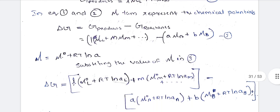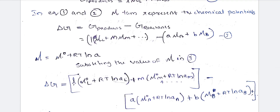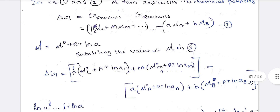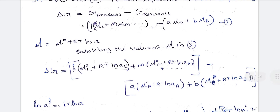In standard state, μ = μ° + RT ln a. Substituting this into the delta G expression, we get: delta G = L(μ°L + RT ln aL) + M(μ°M + RT ln aM) + etc., minus A(μ°A + RT ln aA).